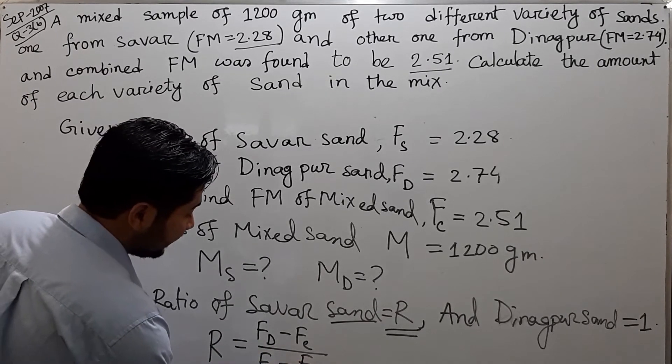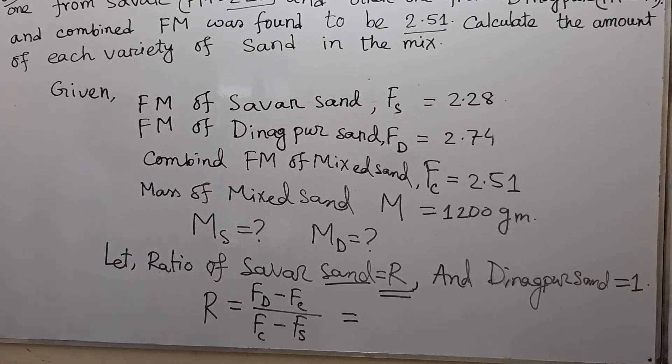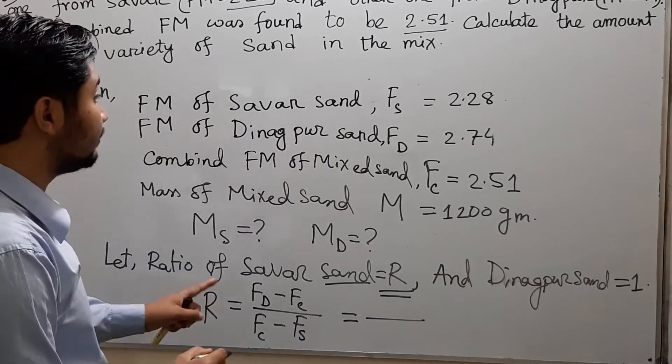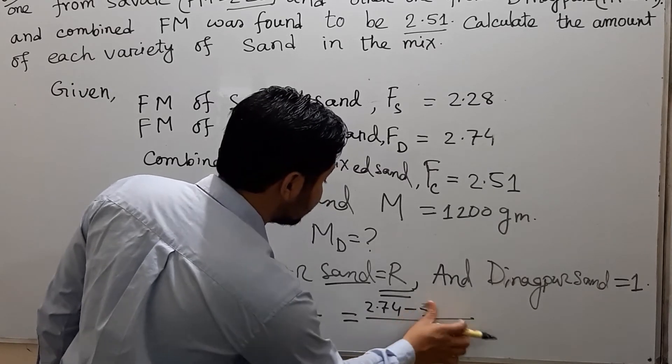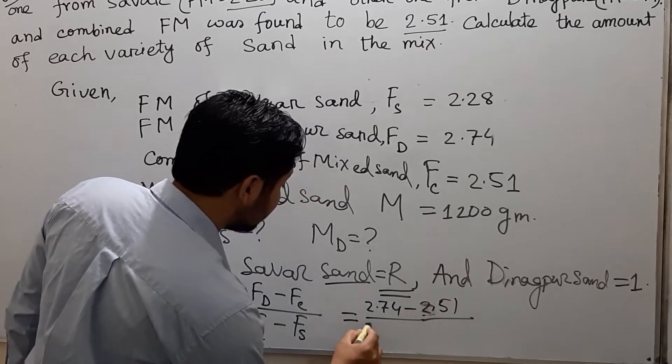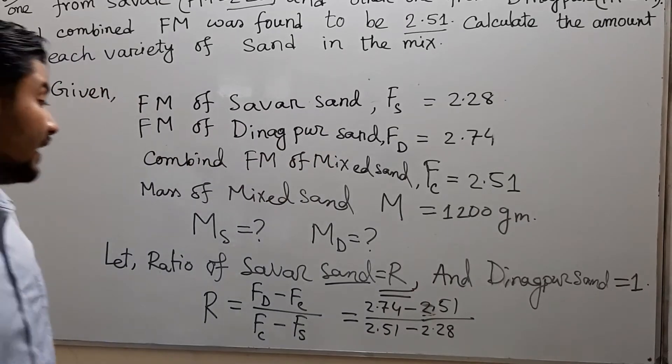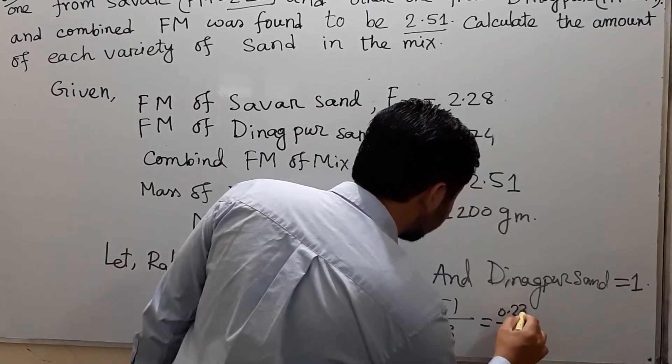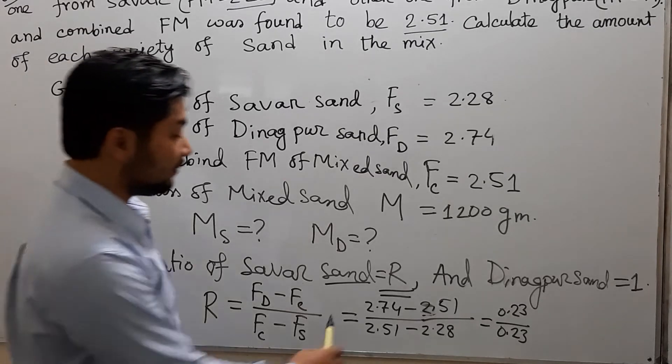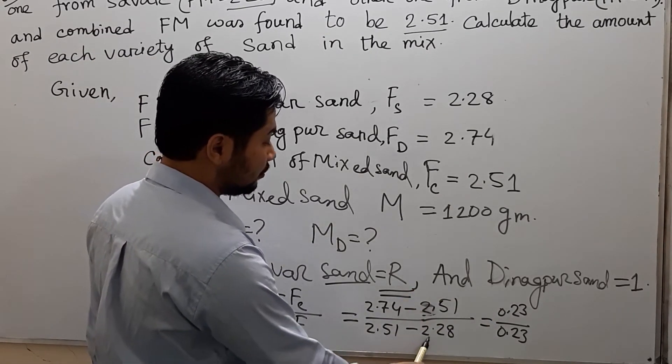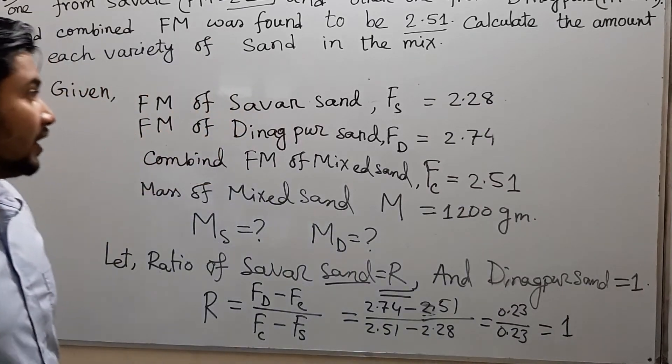Using the formula, R equals 2.74 minus 2.51 divided by 2.51 minus 2.28, which is 0.23 divided by 0.23, equal to 1.